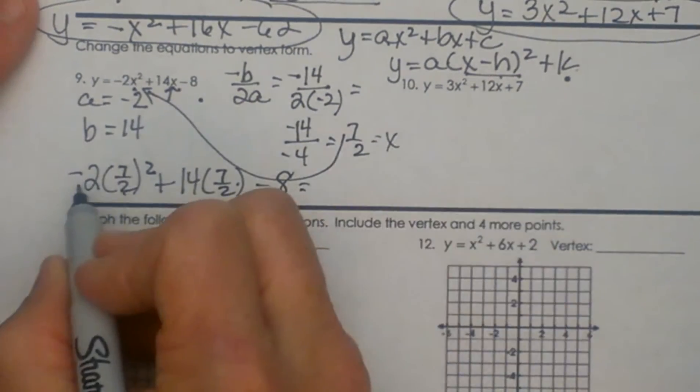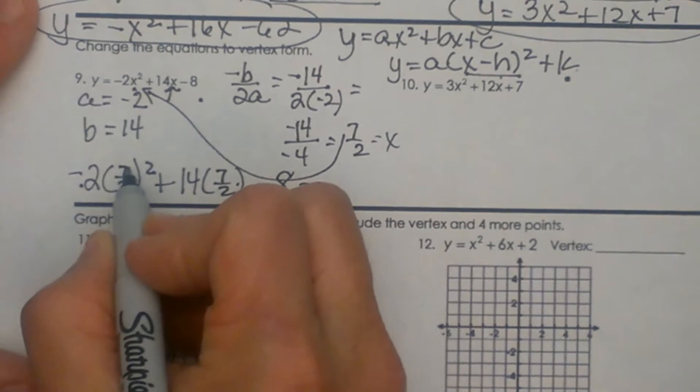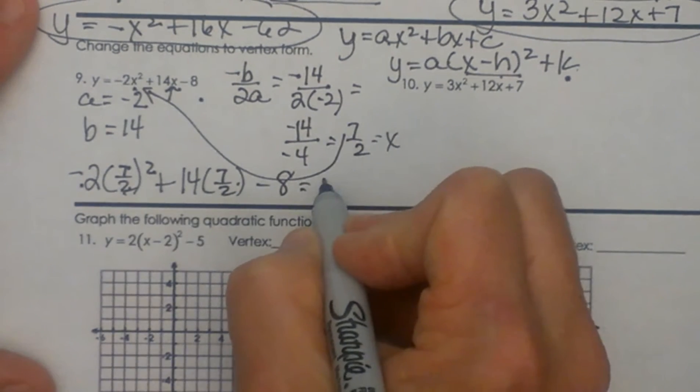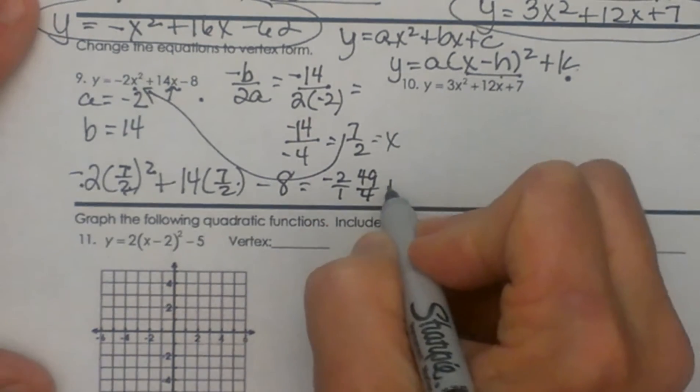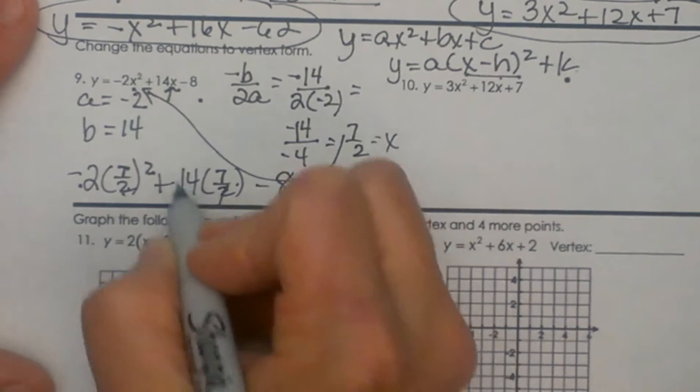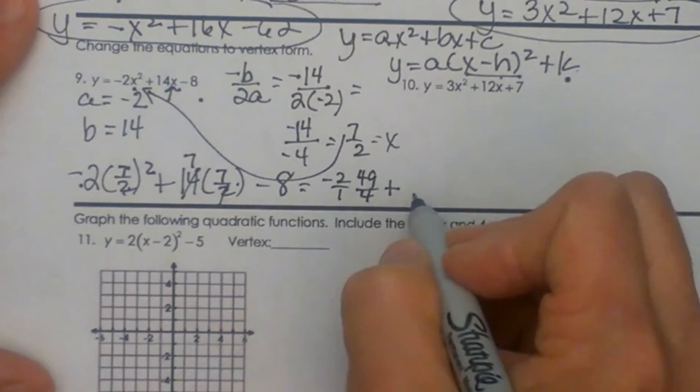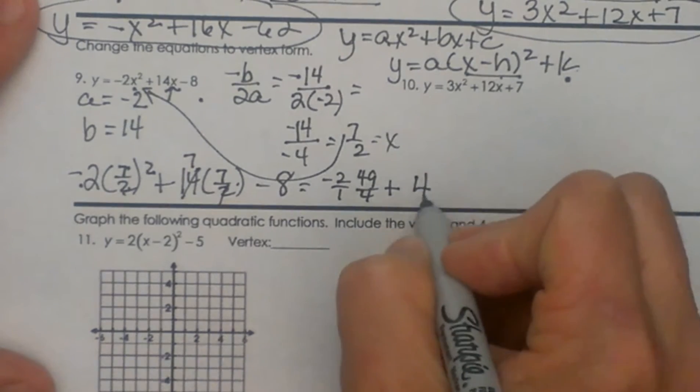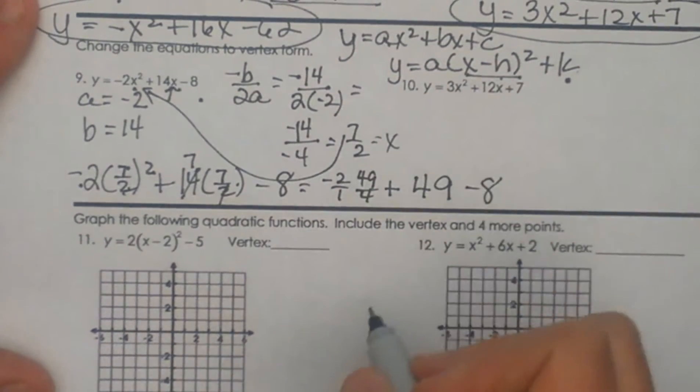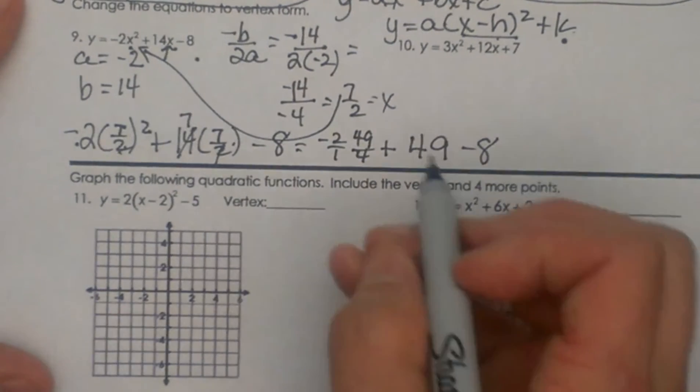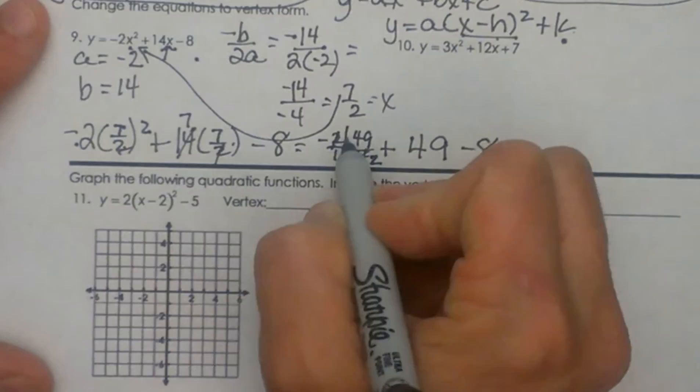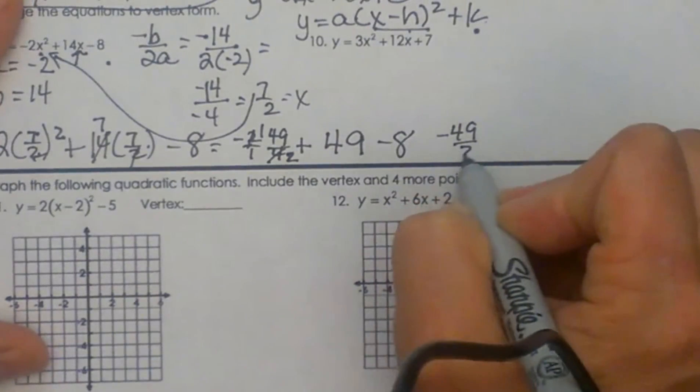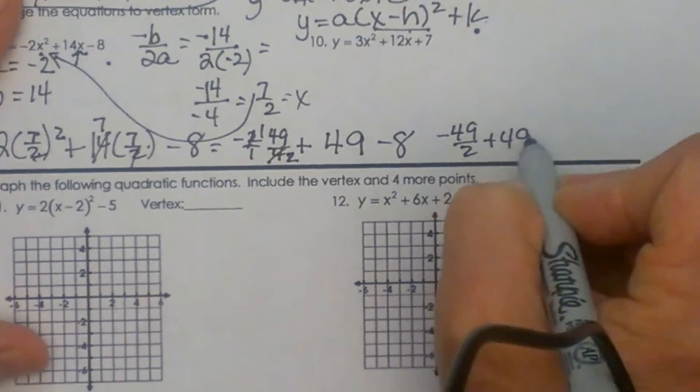So let's clean this up. That is going to give me negative 2 times 49 fourths, so negative 2 over 1 times 49 fourths, plus 2 goes into 14 seven times so that is going to give me plus 49 and then minus 8. Now we just have to do a little bit more cleaning up here. That is going to give me 4 goes into 2, kind of cancel those out, so I have negative 49 halves plus 49 minus 8.